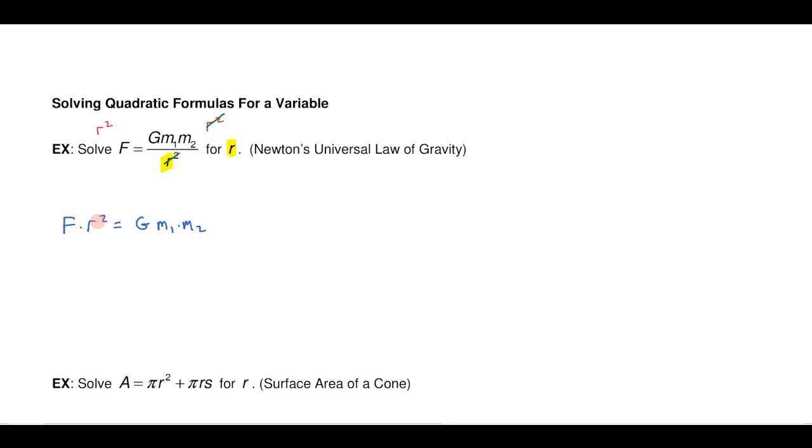Now in this case I don't have an r term, just an r squared, so I go ahead and divide both sides by F and that would give me that r squared is big G m1 m2 over big F and then I just extract the square roots. I want to get r by himself so r would equal, technically mathematically, plus or minus the square root of big G times m1 times m2 all over F.